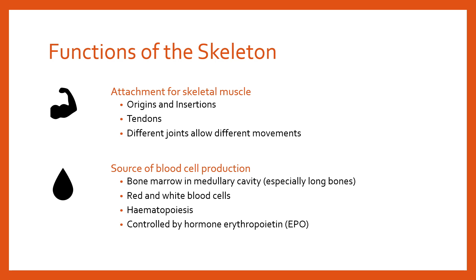EPO is a substance that's naturally occurring in the body — a hormone that stimulates increased blood cell production. You might have heard of it in the context of blood doping, because essentially it creates more or extra blood cells. So if you're a cyclist and you inject additional EPO, you're going to produce an increased volume of red blood cells, giving you an advantage in aerobic activities.